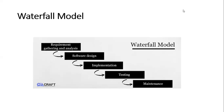The next phase in the waterfall model, which is a very important phase, is implementation. The developer will perform implementation on the designed software, do the coding, and develop modules as per the requirement of the customer or client. Once implementation is completed, they will perform unit testing on that implemented module. Unit testing is the testing of a single module done at the development environment. There are three setups involved in every software design lifecycle: development environment, testing environment (also called QA environment), and user environment (also called production environment).